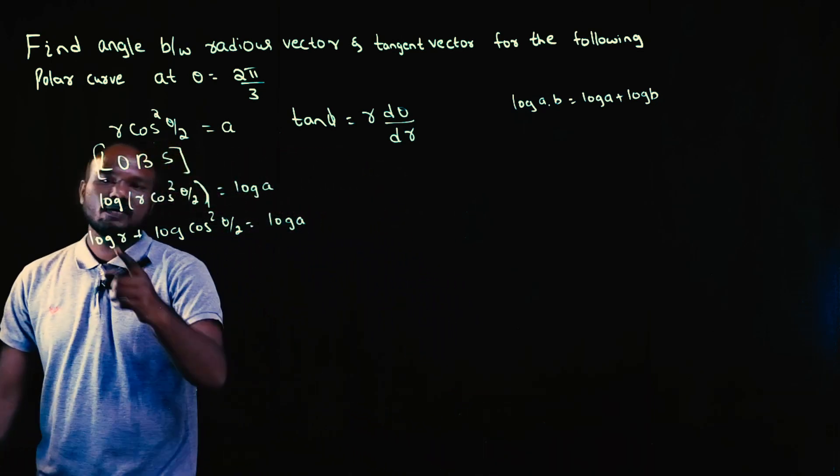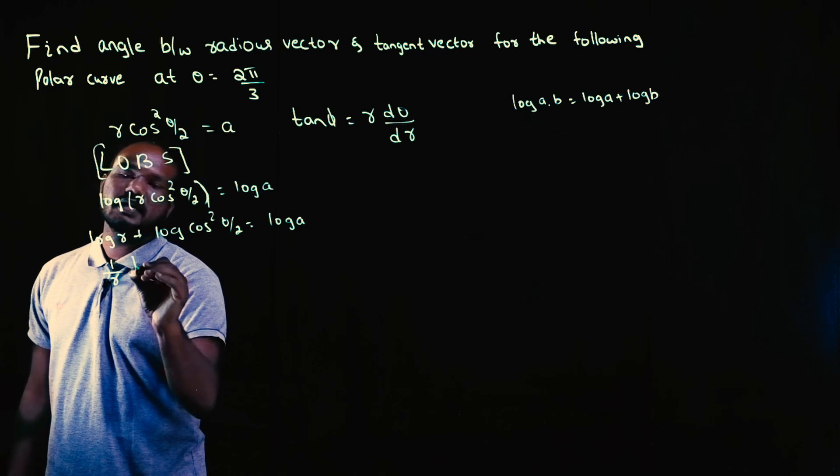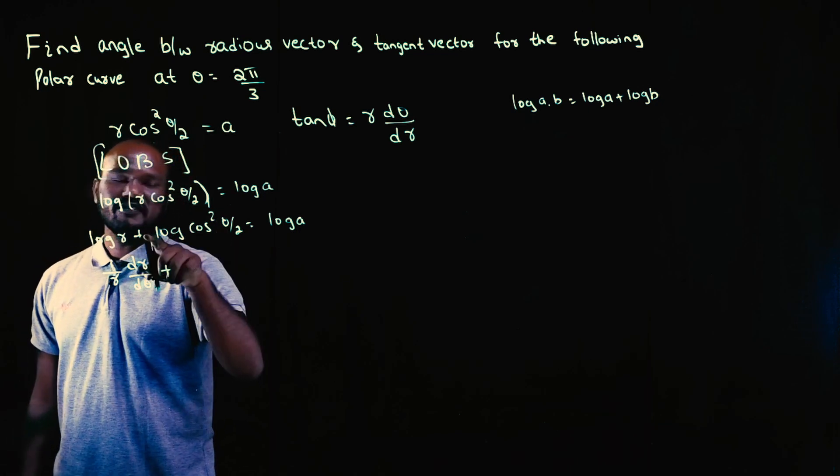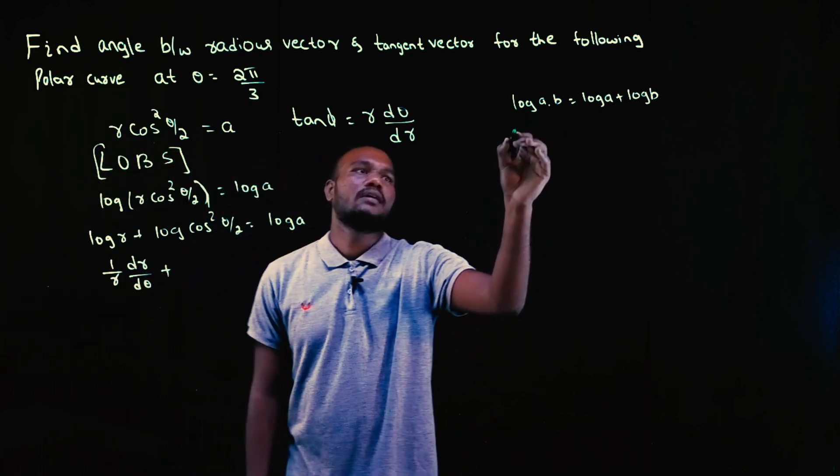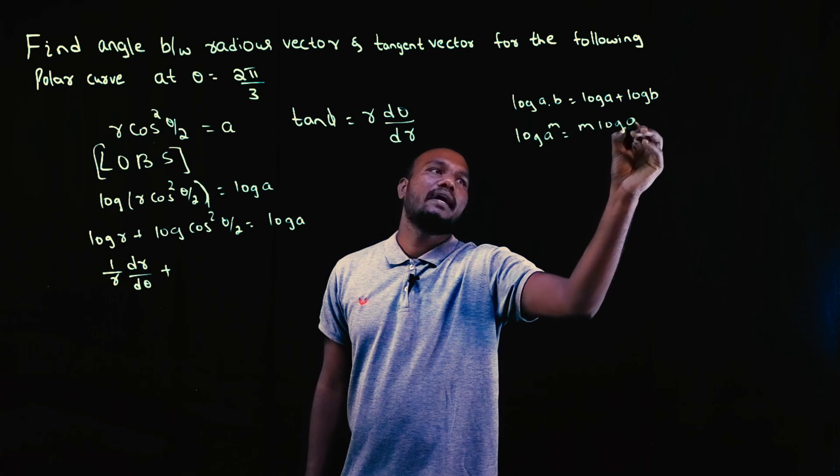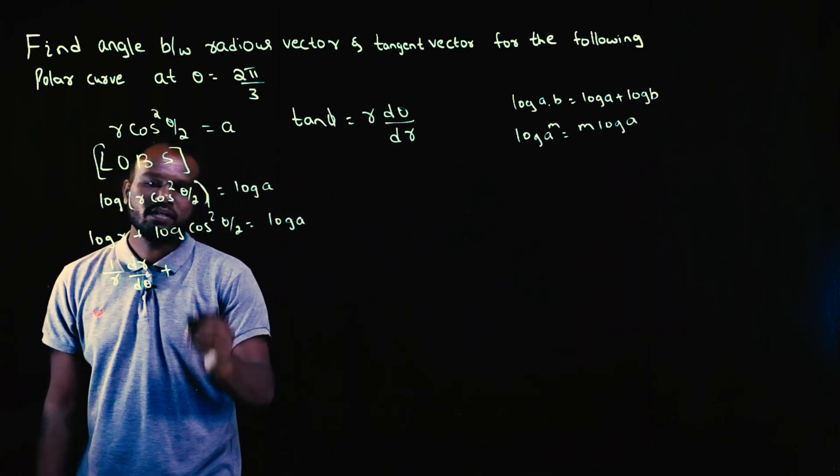So if we want to differentiate, log R differentiation is what? 1 by R, dR by d theta plus. See, 2 will come, friends. So that is another formula. Log A power M is M log A, right? So before differentiation, this 2 is somewhere here. So let's write 2 here.